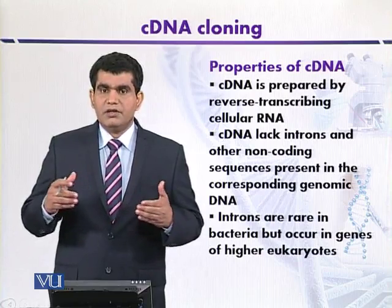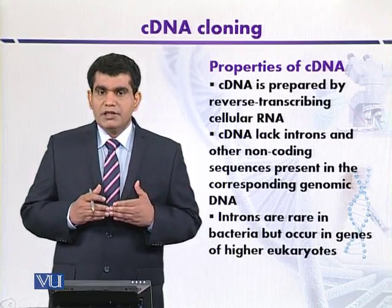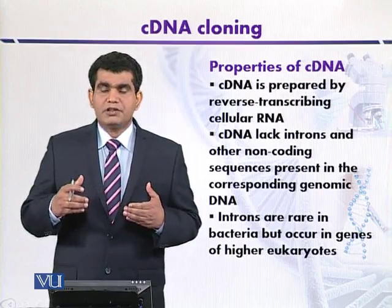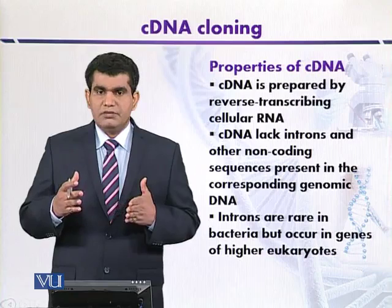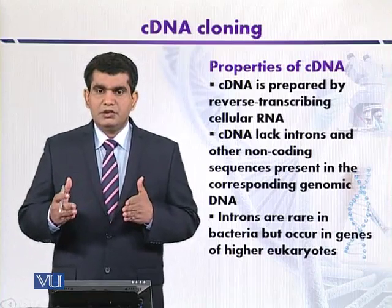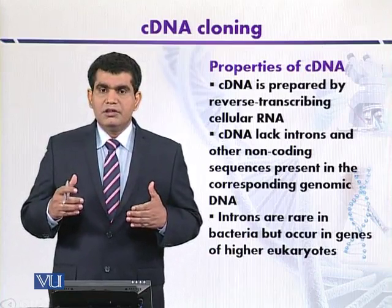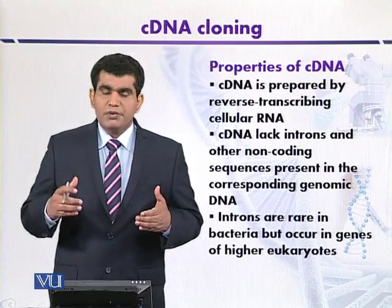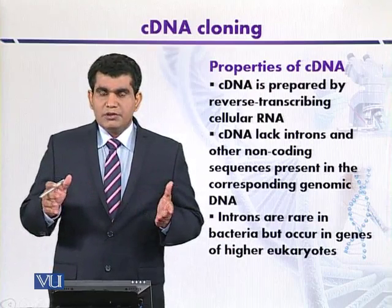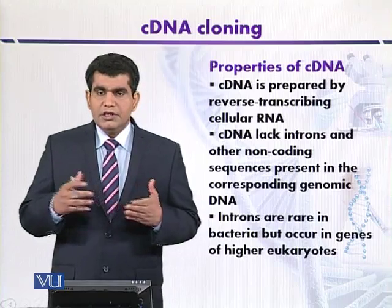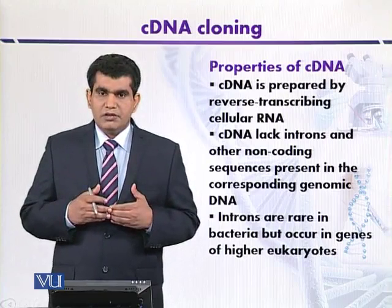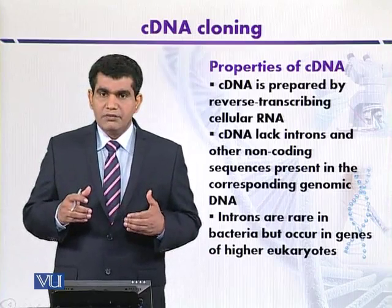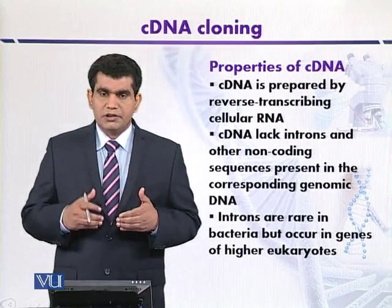The dystrophin gene of humans is very large, and when we attempt to clone it by constructing a genomic library, its huge size makes this impractical. An appropriate strategy is to first convert the DNA into messenger RNA and then into cDNA. When converted into cDNA, the size is around 11 kilobases, making it appropriate to clone. These 11 kilobase pairs of dystrophin cDNA can now code for 3,500 amino acids of the dystrophin protein.